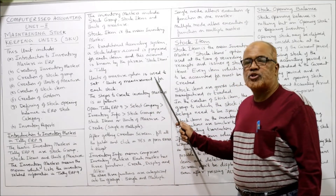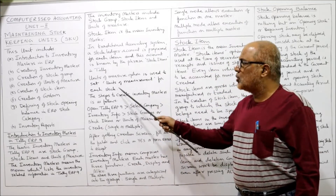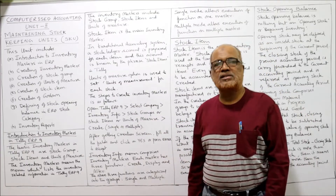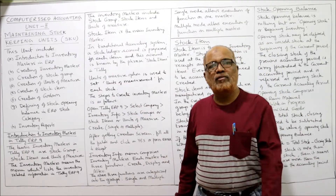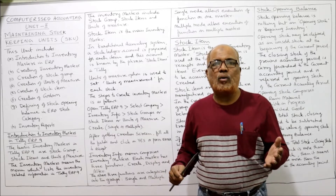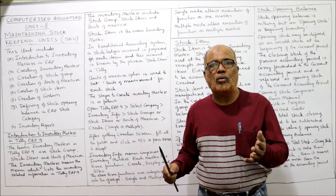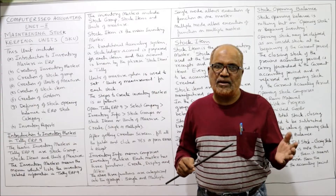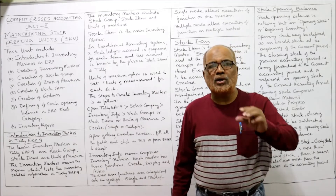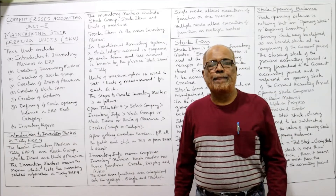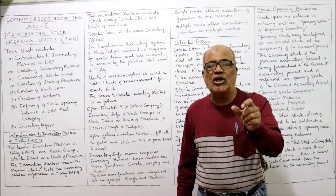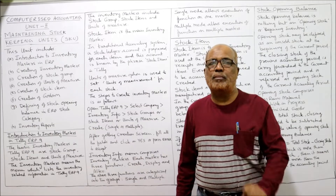In Tally, the units of measure option is used to set units of measurement for each stock. The measuring unit will be different — like kilogram, pound, ounce, quintal, or ton. So we have to specify what is the unit of measurement.